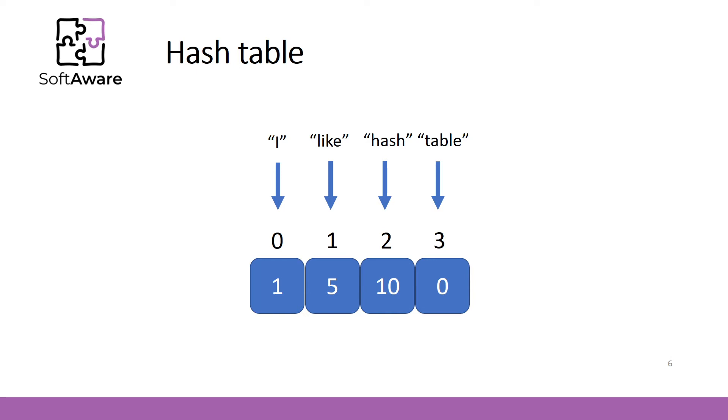So the records of the hash table are the key value pairs. Where in this particular example string is a key and number is a value. Now we need to convert these keys to a certain indexes of the array and save the associated values into the array. Now the question is how can we convert string to number?